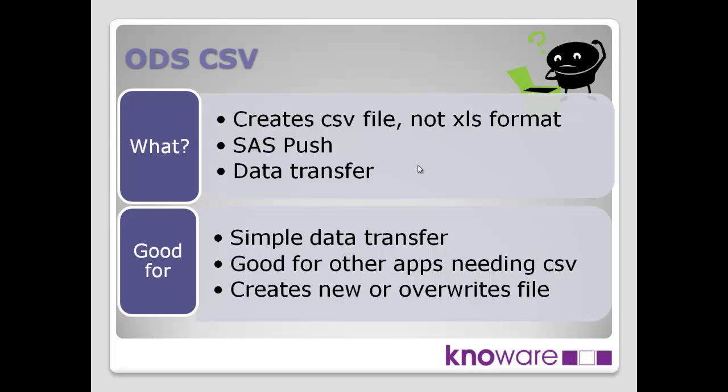We'll talk about the different types of ODS output. Here we're talking about the CSV destination — that's how ODS terms work, specifying what destination you're going to. A CSV destination creates comma-separated values files. We're not creating an XLS format spreadsheet here. The interface type is a SAS push, because SAS is controlling the creation of this data, pushing it out into a CSV file. It's the data itself being transferred, not resulting procedure output.